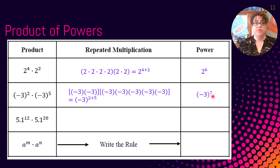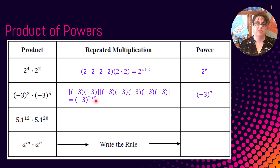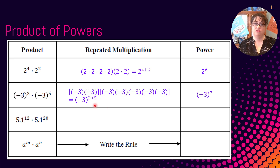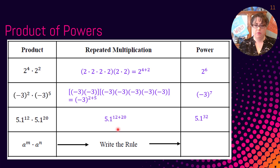We're already developing a pattern here. Instead of having to write it all out, why don't we just add the exponents? So we have the base 5.1 and the base 5.1. Instead of writing it out 12 times and 20 times, we can just add those: 5.1 to the 12 plus 20, which then would be 5.1 to the 32nd power.